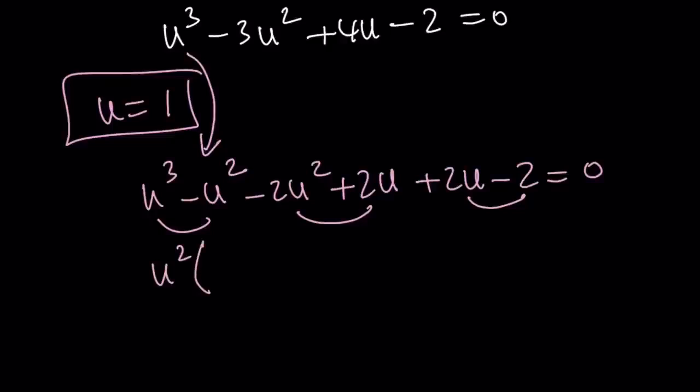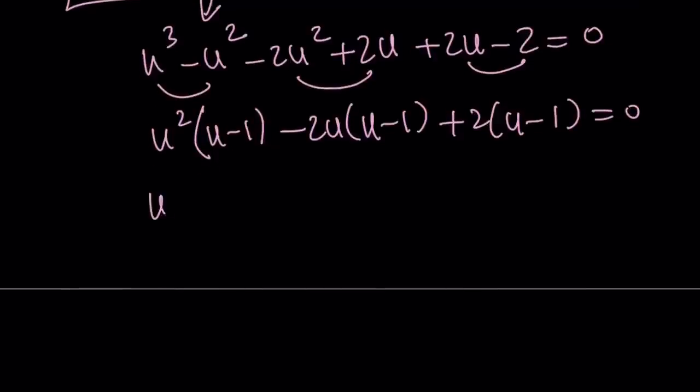Factor out u squared, u minus 1, minus 2u, u minus 1, plus 2 times u minus 1. Great. So now u minus 1 can be taken out. u squared minus 2u plus 2 is equal to 0.